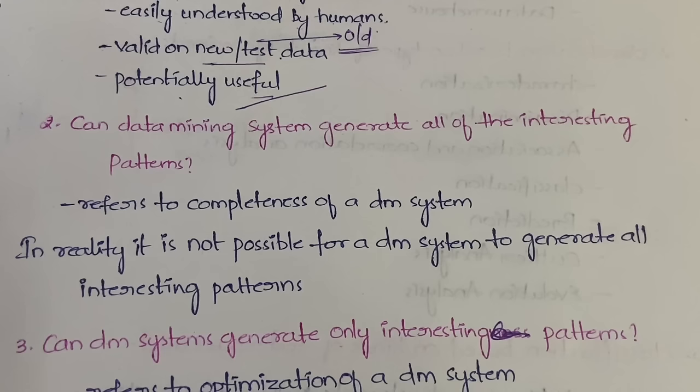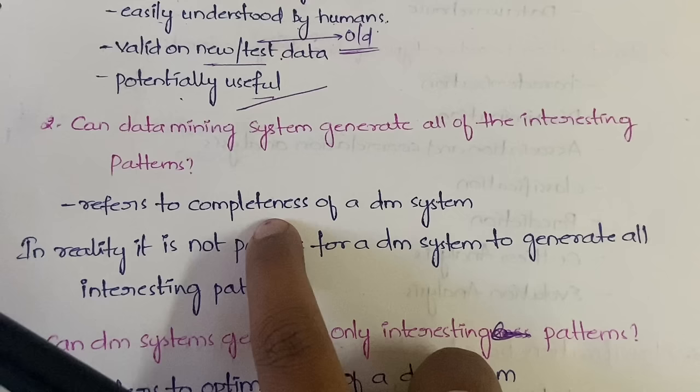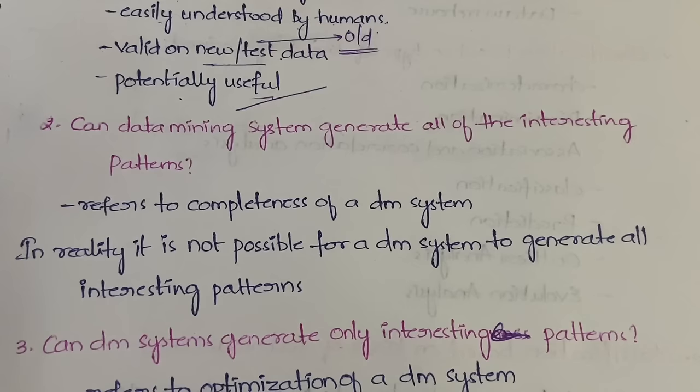It is not possible for the data mining system to generate all of the interesting patterns whatever you want. This refers to the completeness of a system. If a system is able to generate all the interesting patterns the user wants, the system is said to be complete — but no data mining system is actually complete. In reality, it is not possible to generate all interesting patterns.